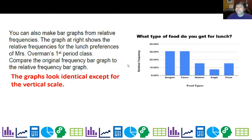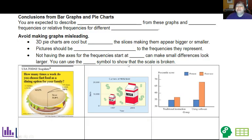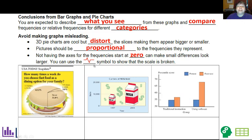Some conclusions from bar graphs and pie charts: you are expected to describe what you see from these graphs, like compare one category to another. 3D pie charts are cool but they distort the slices, so avoid these at all costs. Pictures should be proportional to the frequencies they represent. Not having the axis start at zero can make small differences look larger, and you can always use this little symbol to show that the scale is broken.